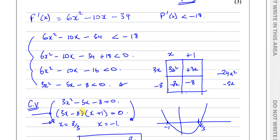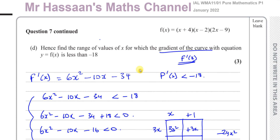So those are the answers for this question — that's the end of question number 7. Other questions from this P1 January 2022 international A-level paper can be found in the playlist that should appear on screen. Questions related to graphs of functions and solving quadratic inequalities will also be in the relevant playlists. You can subscribe to my channel by clicking on the link — thank you for watching and see you soon.